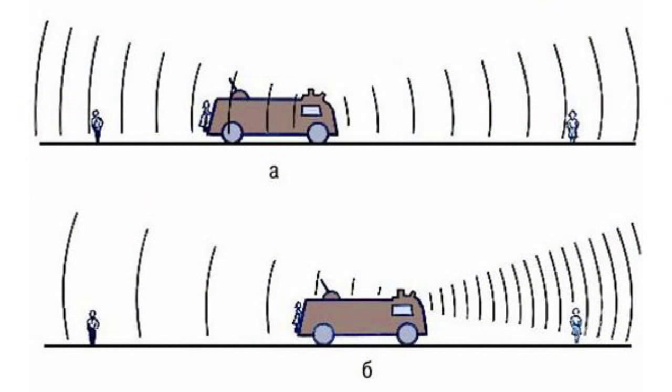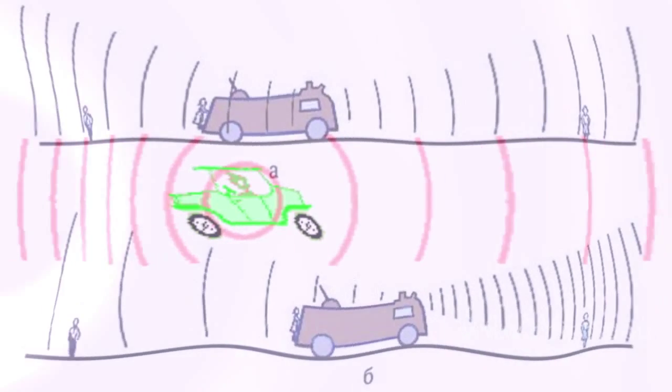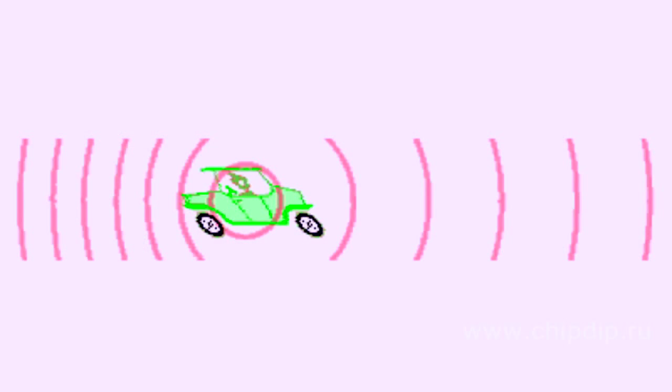But if the car is getting closer to the observer, the frequency of the sound waves will increase and the wavelength will decrease. The tone that the observer will hear will be higher than the one the siren is actually producing. When the car is passing by the observer, you will hear the same tone that the siren is actually producing.